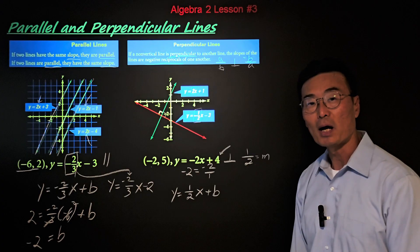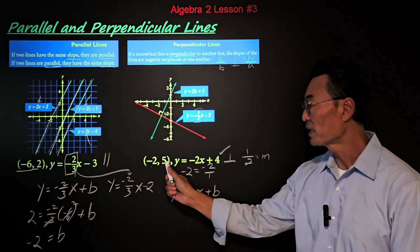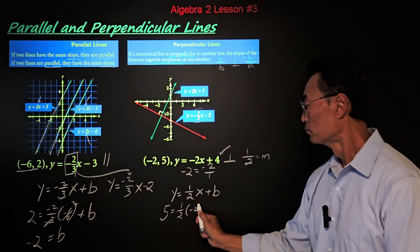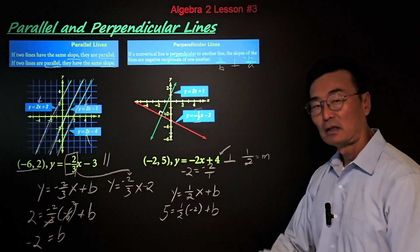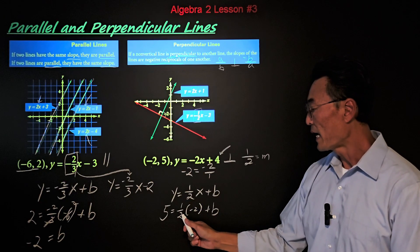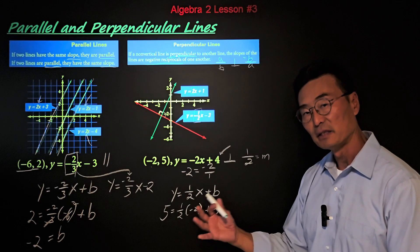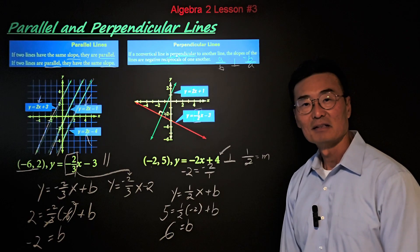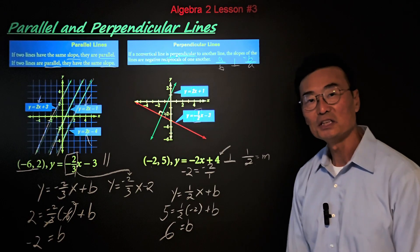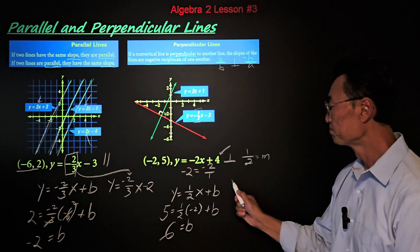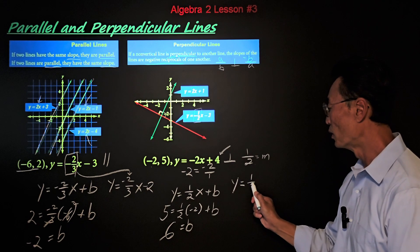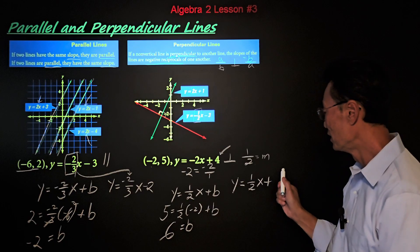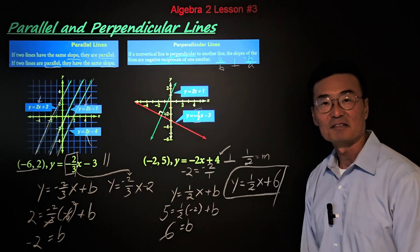To find the y-intercept, we plug in negative 2 for x and 5 for y. Then 1 half times negative 2 equals negative 1, giving us the value of b as 6. Our final equation of the perpendicular line is y equals 1 half x plus 6.